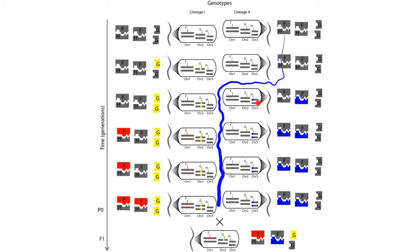This mutation is shown in blue. Note that this DNA sequence change has caused a change in the shape of protein H, but protein H is still able to interact appropriately with the original gray version of protein F, so this mutant individual is still healthy. Later still, individuals in lineage 2 only have the blue version of gene H, and a new mutation occurs in gene F in lineage 1. This mutation also causes a change in the shape of protein F, and protein F is still able to interact appropriately with the original gray version of protein H, so this mutant individual is still healthy.